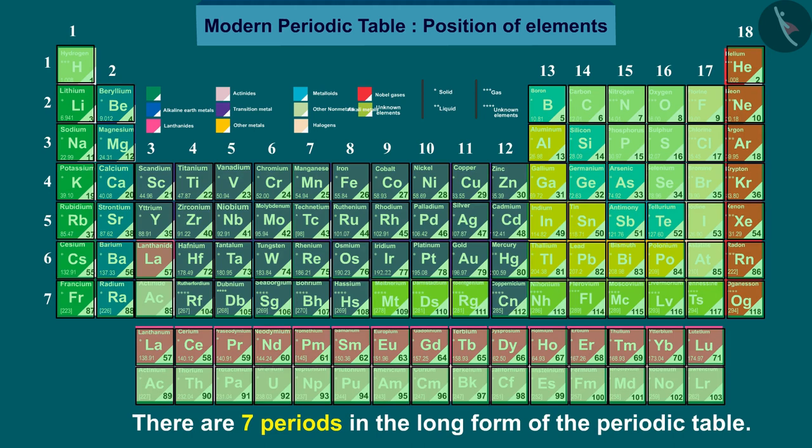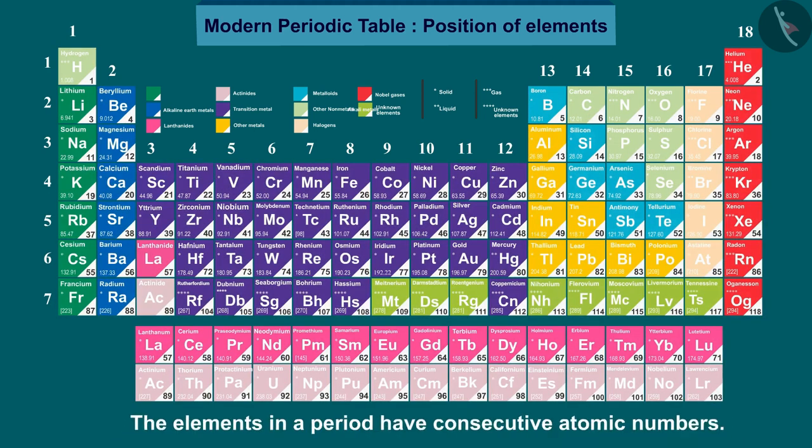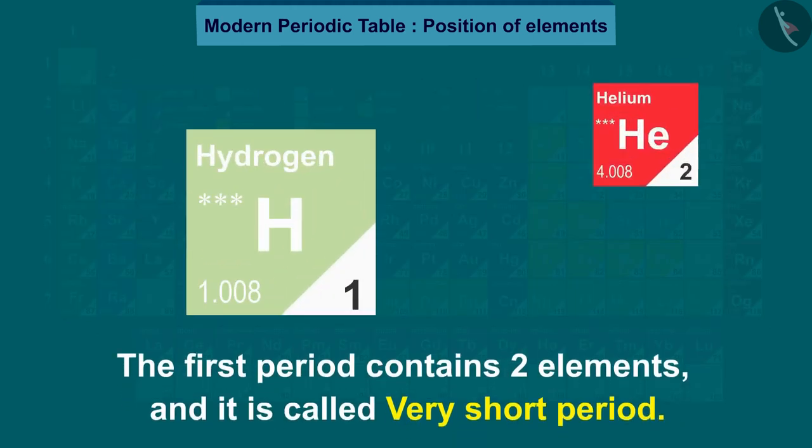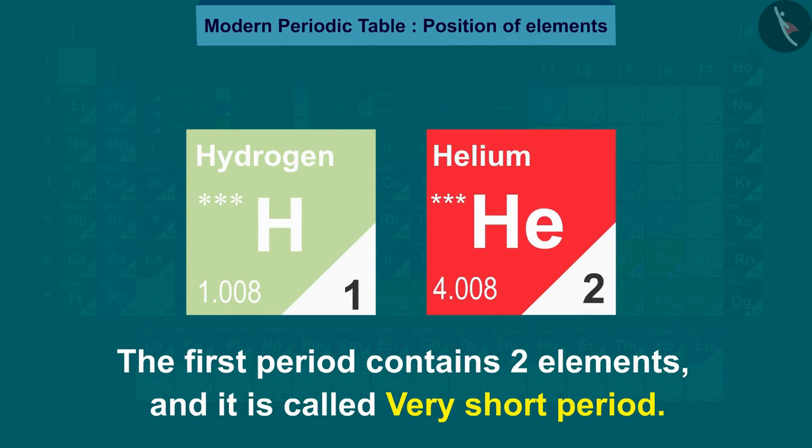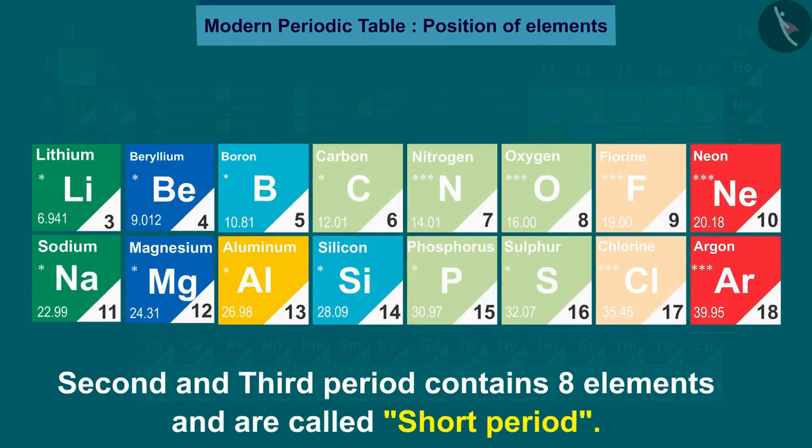The elements in a period have consecutive atomic numbers. The first period contains two elements and is called a very short period. Second and third periods contain eight elements and are called short periods.